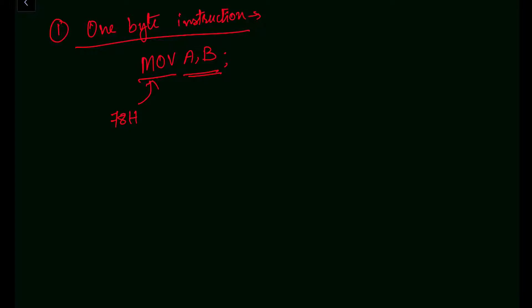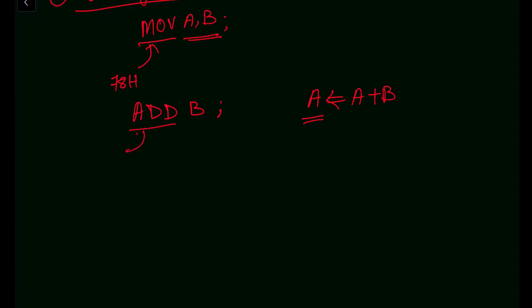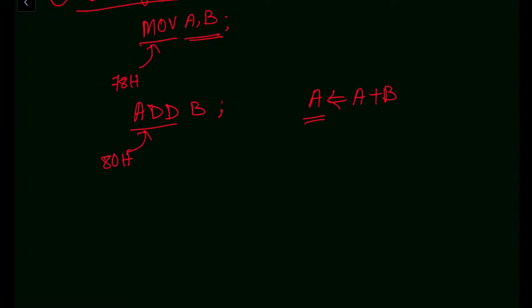Let us take another one-byte instruction example: ADD B. The meaning of ADD B is: add the content of register B to the content of the accumulator. The accumulator content will be rewritten with the result of A plus B — whatever the result is, it will be stored in the accumulator. The opcode for ADD B is 80H — this is also a one-byte instruction.